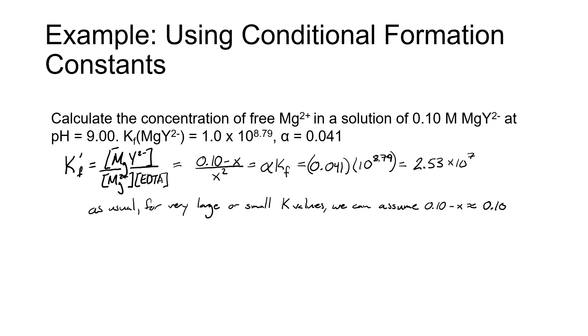We can use the reaction for the formation of magnesium Y2 minus to calculate the concentration of free magnesium, because we can look at the equilibrium, either in the reverse or the forward direction, provided we have the right value for the equilibrium constant, because an equilibrium reaction can always be read forward or reverse.